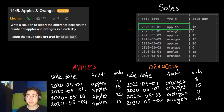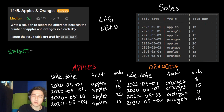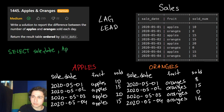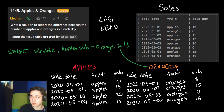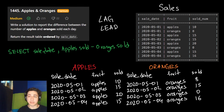We couldn't have done that before because for each day, the amount of apples and oranges were on separate lines. Once they're all on the same line, our query will just select the sale date — we want the day each item was sold — and then the apples table sold amount minus the oranges table sold column. This will give us the difference we're looking for. And that would be our solution.